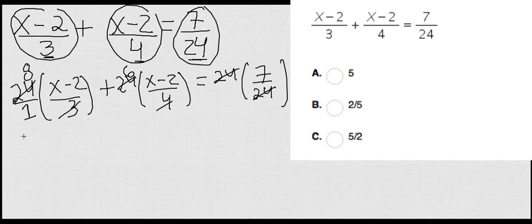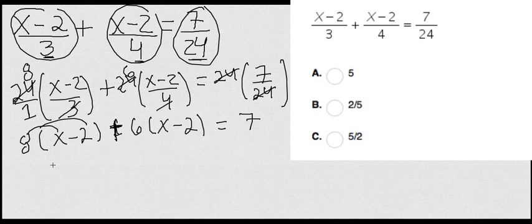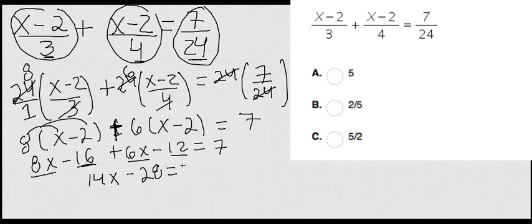Awesome. Now, I'm going to have 8 times x minus 2 plus 6x minus 2 equals 7. Now, we have a much easier equation, and I'm just going to distribute: 8x minus 16 plus 6x minus 12 equals 7. Finally, I'm going to group my x's. 8x plus 6x is 14x, negative 16 minus 12 is negative 28 equals 7.